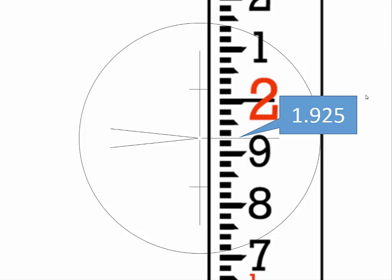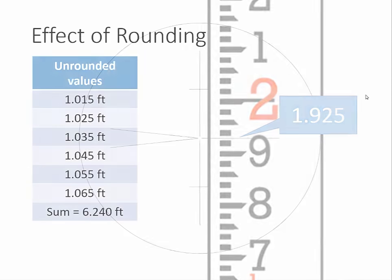Most of us learned in our math classes to round 1.925 feet upward to 1.93 feet. This rule, while simple to remember, creates an error when we have to round a series of measurements. Consider this series of six measurements. For each measurement, the crosshair exactly bisected a white space or a black mark. Thus, each reading ends in five.